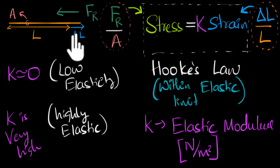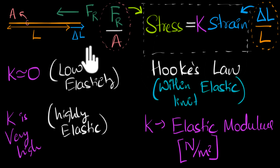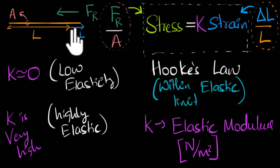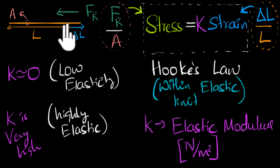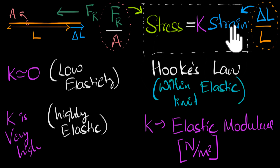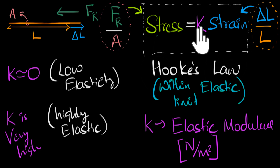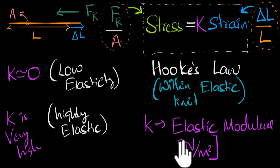There are different ways in which you can deform a material — for example, you can take a wire and stretch it, bend it, or twist it. For different kinds of strain you produce, the material has to produce an equivalent kind of restoring force, and so an equivalent kind of stress. For each kind of strain you produce, there will be a corresponding stress generated. And for each of these stress-strain pairs, Hooke's Law works. So for each kind of stress and strain, we will have different kinds of elastic moduli.